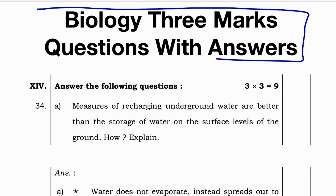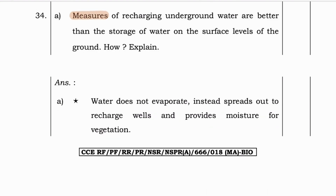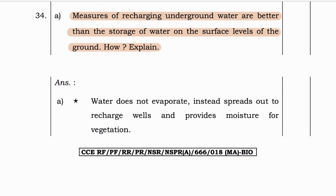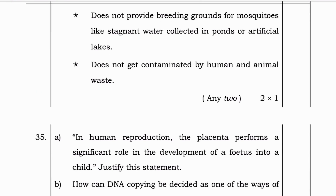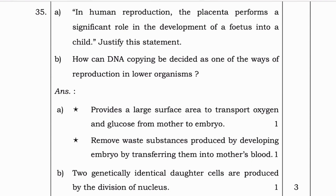Biology three marks questions with answers. Why are measures of recharging underground water better than surface storage? Water does not evaporate; instead it spreads out to recharge wells and provides moisture for vegetation. It does not provide breeding grounds for mosquitoes like stagnant water in ponds or artificial lakes, and it is not contaminated by humans or animal waste.